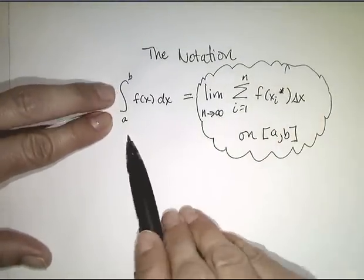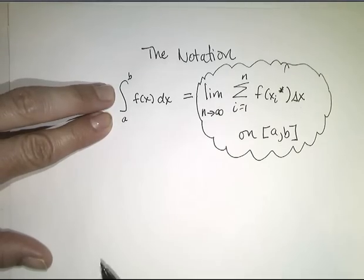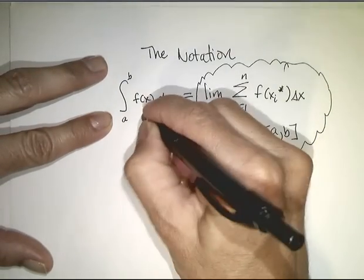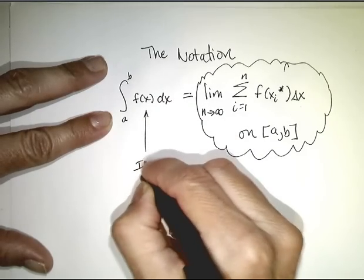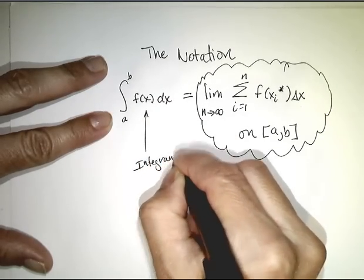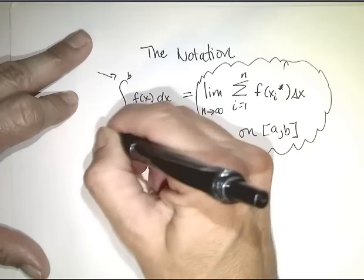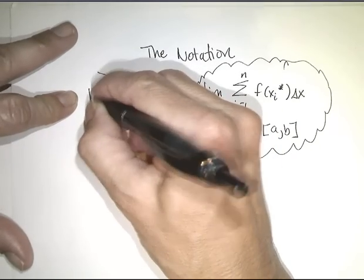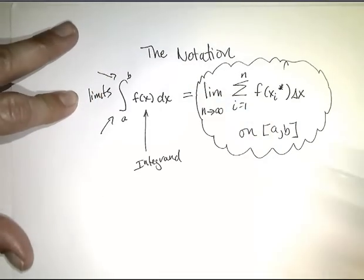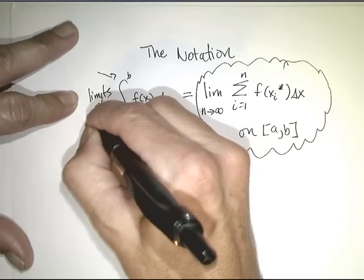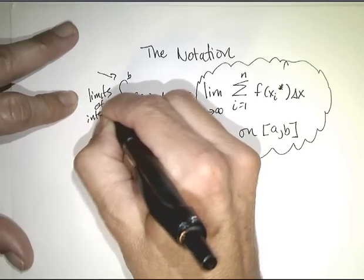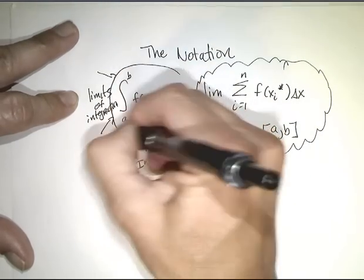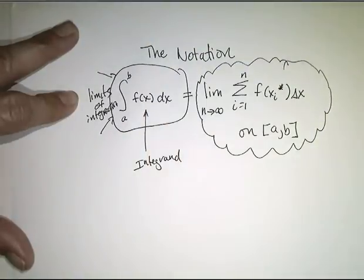And we read it as the integral from a to b of f of x dx. This f of x is called the integrand. And a and b are called your limits of integration. And the whole piece is your integral.